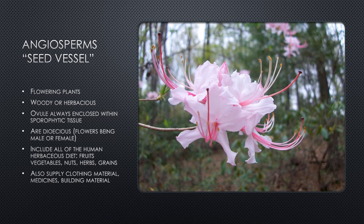Angiosperms are all flowering plants — woody or herbaceous. Angiosperm means 'seed vessel' because the ovule is always completely enclosed within sporophytic tissue. They are always dioecious with flowers that can be either male or female. This is the category containing everything you eat: fruits, vegetables, nuts, herbs, and grains. Angiosperms are also economically important for clothing materials like cotton and linen, hardwood building materials like oak, and many medicinal products.